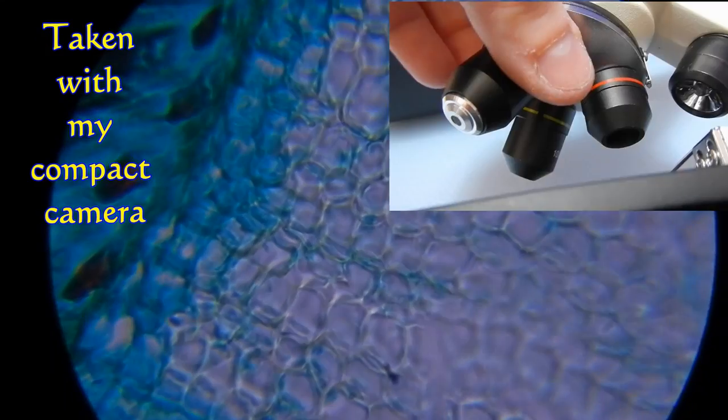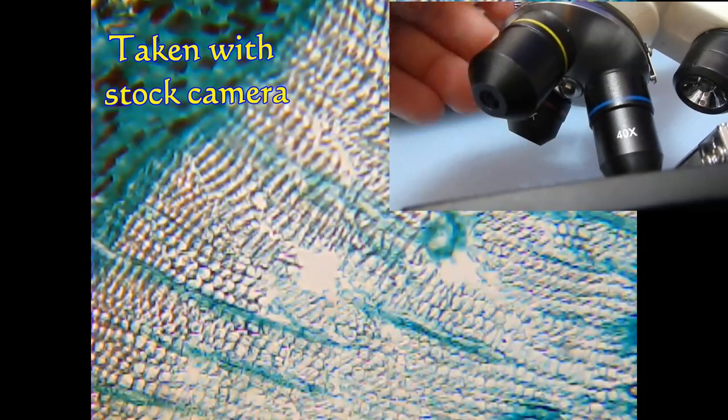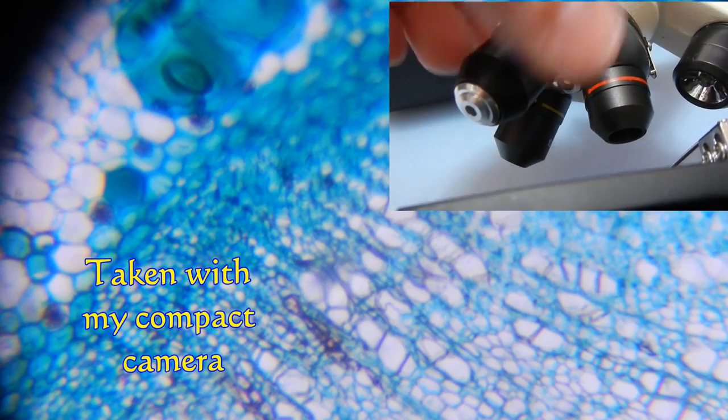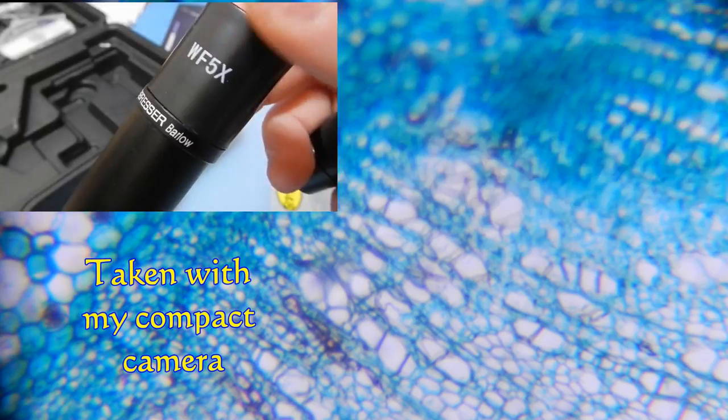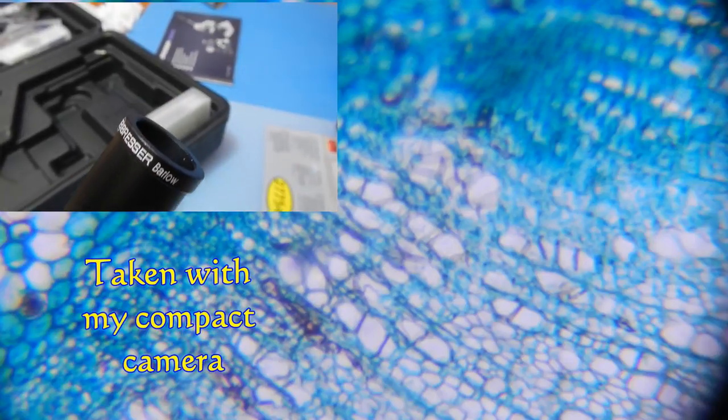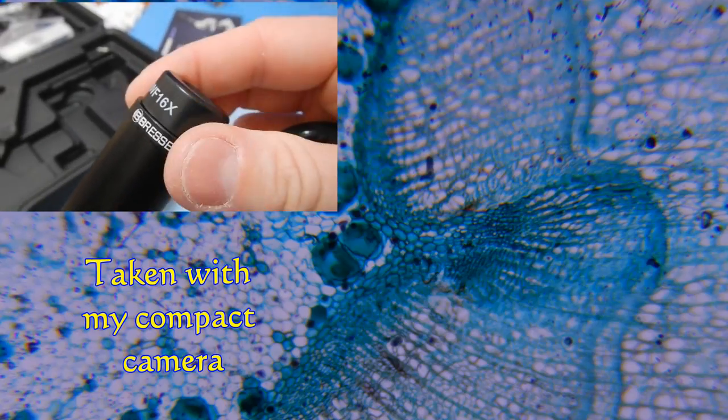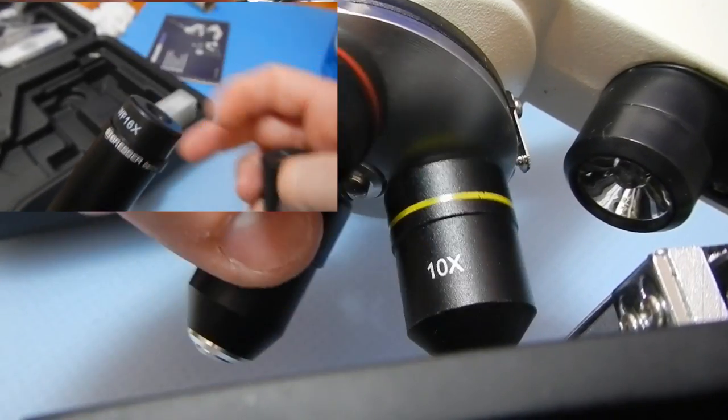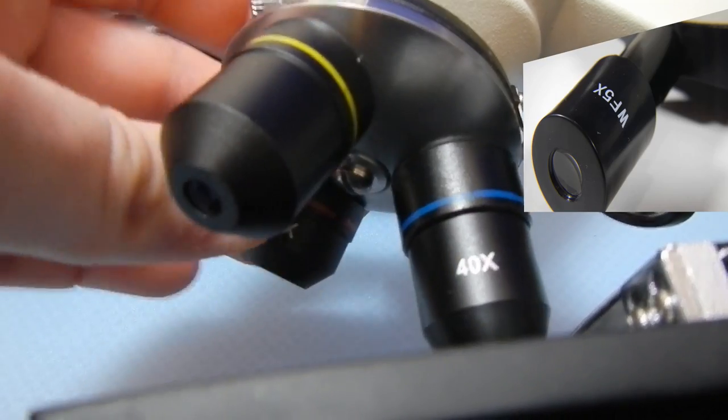There is a revolver style lens changer allowing you to choose from three lenses: 4x, 10x and 40x magnification. There are two oculars, 5 times and 16 times. And you must not forget about Barlow ocular tube extender giving you extra magnification.